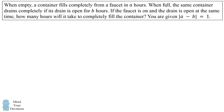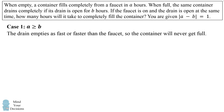I actually missed one of the cases and Daniel pointed out that my answer was incomplete. The first case you should consider is if A is greater than or equal to B. This means it takes longer for the faucet to fill the container than for the drain to completely empty it. In that case the drain empties as fast or faster than the faucet, so the container will never get full.